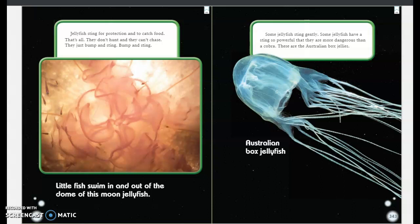Little fish swim in and out of the dome of this moon jellyfish. Some jellyfish sting gently. Some jellyfish have a sting so powerful that they are more dangerous than a cobra. These are the Australian box jellies.